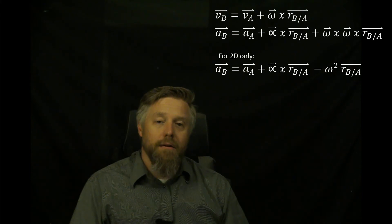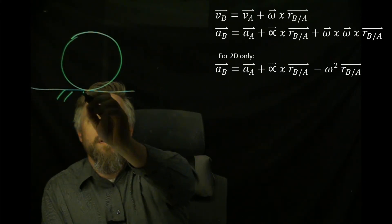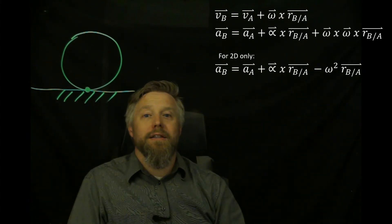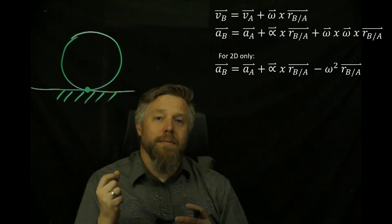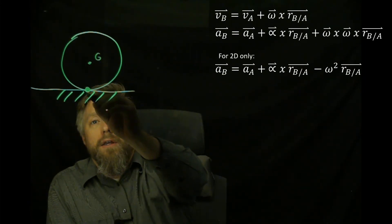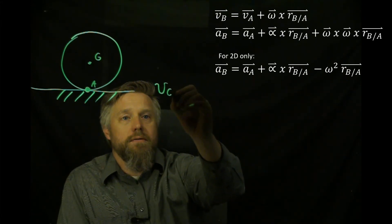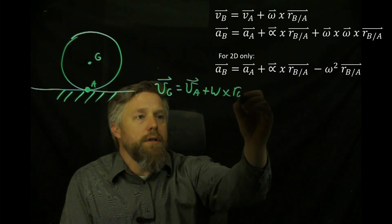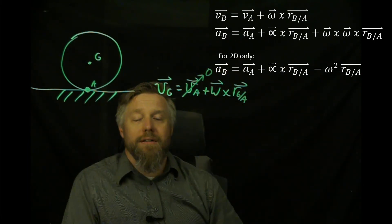We already talked about one shortcut — using the instantaneous center of zero velocity. If you can find that instantaneous center, the velocity is zero at that point. There is no instantaneous center of zero acceleration, and the instantaneous center of zero velocity does not have zero acceleration, because that center is always changing. For a rolling disk going along the ground, there are really two points we know quite a bit about. The first is that instantaneous center of zero velocity — the velocity is zero because the ground is not moving, and if the disk is not slipping, that point on the disk is also not moving.